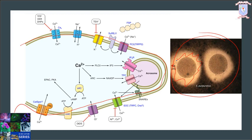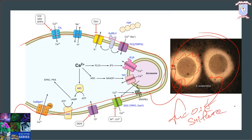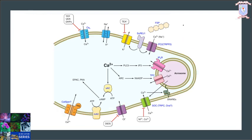The acrosomal reaction in sea urchin is initiated by contact of the sperm with the egg jelly. The egg jelly contains sulfated polysaccharides — fucose sulfate — that bind to specific receptors located on the plasma membrane above the acrosomal vesicle. The acrosome reaction inducer of sea urchin is FSP from egg jelly, and FSP binds to a specific receptor on the plasma membrane of the sperm head, which then activates three sperm membrane proteins.